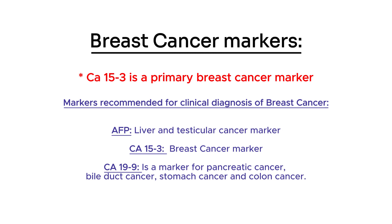AFP, which is a marker for liver and testicular cancer. CA15-3, which is a breast cancer marker. And CA19-9, which is a marker for pancreatic cancer, bile duct cancer, stomach cancer, and colon cancer.